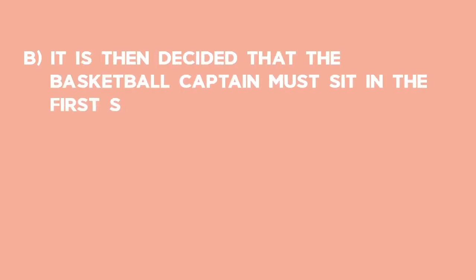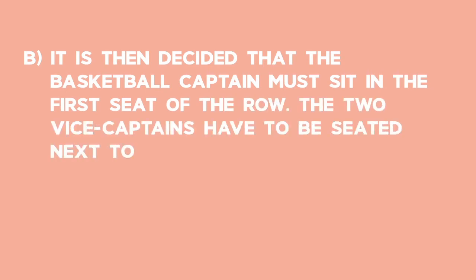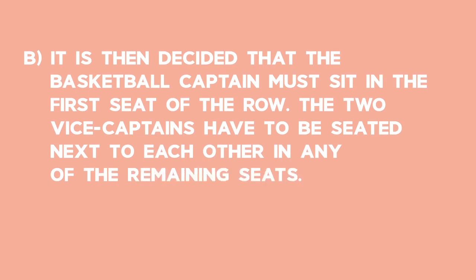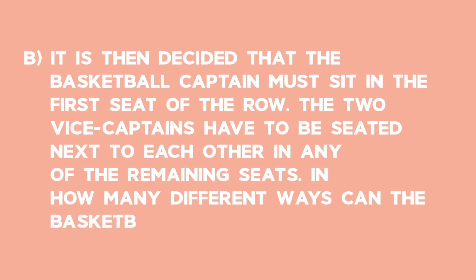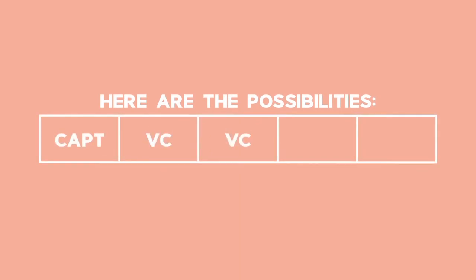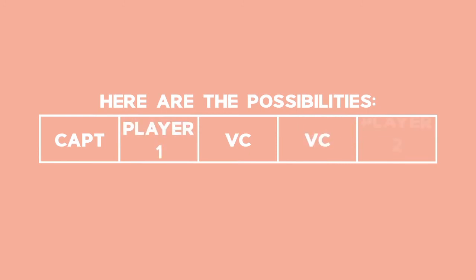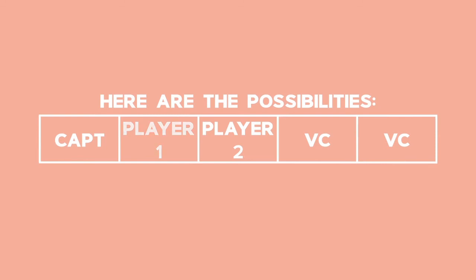Question B tells you that the captain must sit in the first seat of the row, and the two vice-captains have to be seated next to each other in any of the remaining seats. Listing the possibilities, the players can therefore be seated in six different ways.